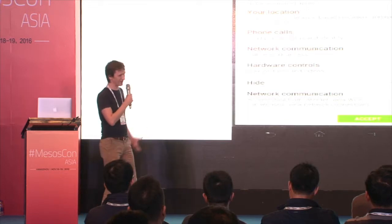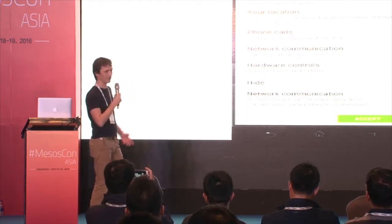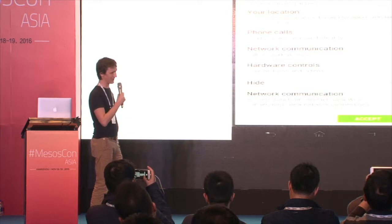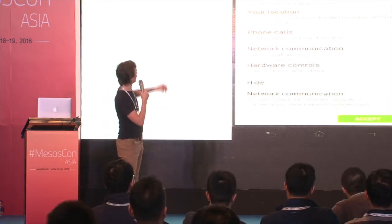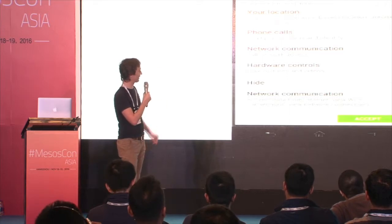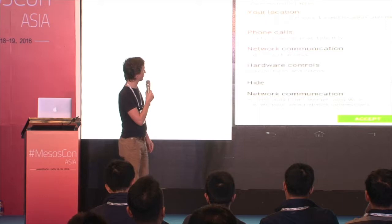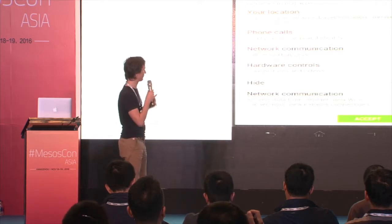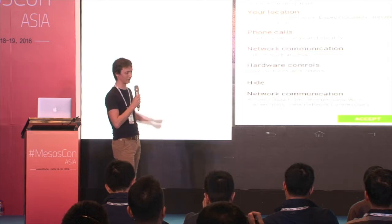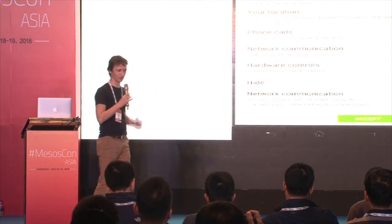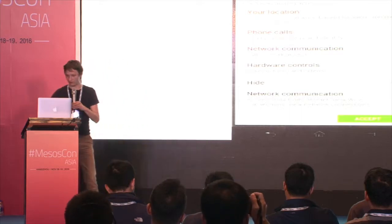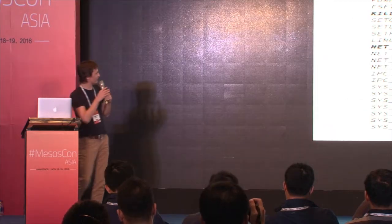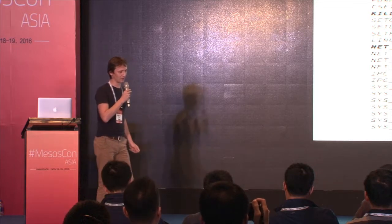As a motivating example, this is some application for phones which provides a flashlight. The one on the left-hand side requires basically the maximal capabilities, and the one on the right-hand side requires access to take pictures and videos, basically controlling the camera where the flash sits. I would be much more comfortable to run the application on the right than the one on the left, which wants to make phone calls — I don't know why my flashlight needs to make phone calls.